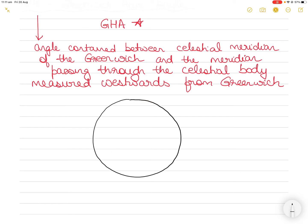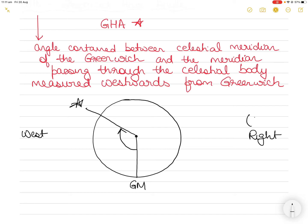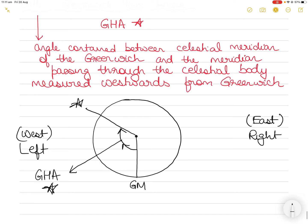So if I draw a celestial sphere, this is the Greenwich meridian — let's call it GM. If I go westward from here — the left is westward and the right is east — this angle from the Greenwich meridian to the star measured westward is called GHA star. If it were the sun it would be GHA sun, if it were a planet it would be GHA that planet, or GHA moon for the moon.